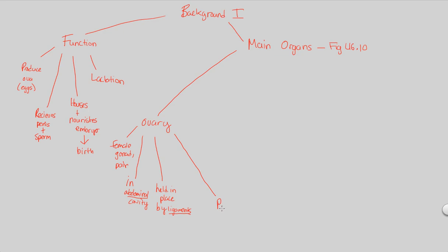The ovary is very important because it's in charge of producing two major parts of female reproduction. First and foremost, the ovaries produce gametes — they are the female gonad and therefore must produce gametes. Those gametes are specifically referred to as oocytes, or eggs, produced via a process known as oogenesis. Oocytes means eggs essentially, also referred to as ova. Remember, 'genesis' means birth and 'oo' refers to the Latin root for egg.